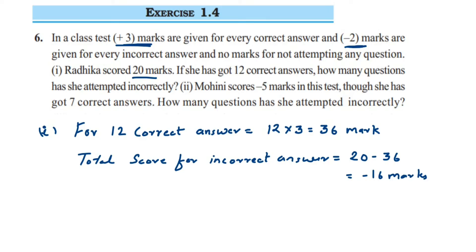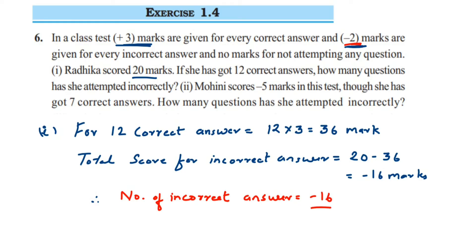Now we have to find the number of incorrect answers. For every incorrect answer they give minus 2 marks, so we have to find how many minus 2s are present in minus 16. We divide minus 16 by minus 2. Minus and minus cancel, and 16 divided by 2 is 8. So she has attempted 8 incorrect questions — that is the answer to the first question.